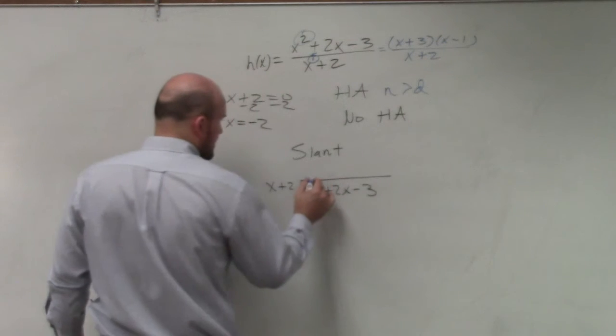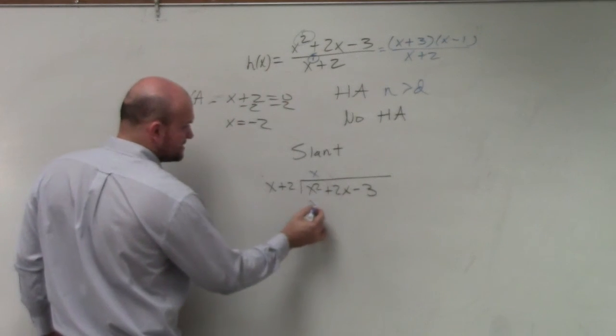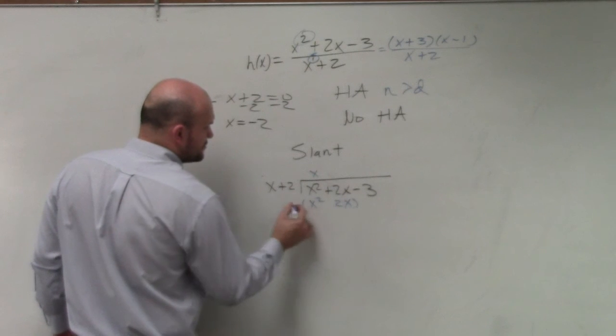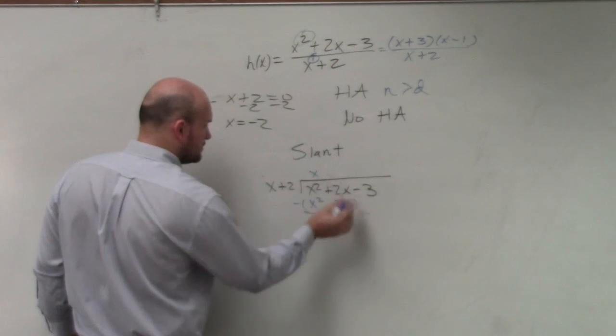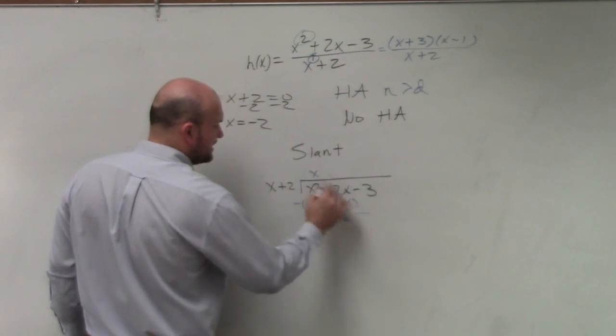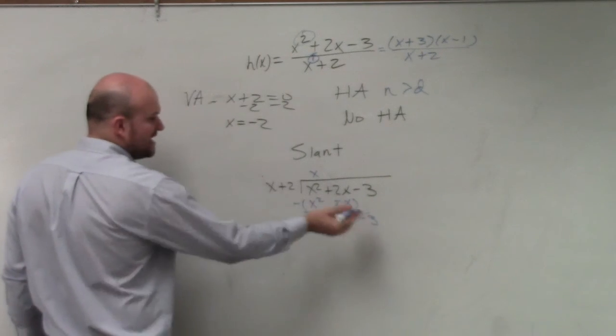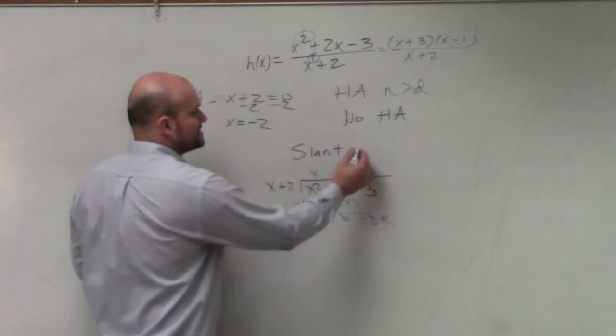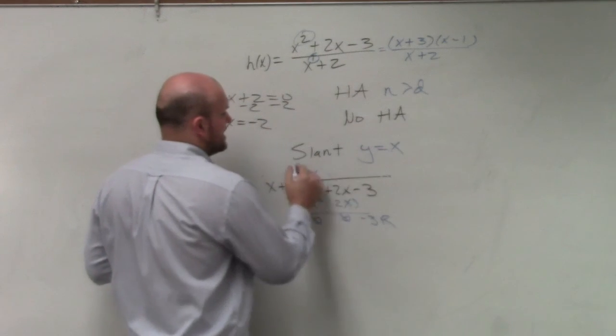So how many times does x go into x squared? That's x times. x times x is x squared, x times 2 is 2x. Subtract. Bring down the negative 3. x does not go into negative 3, so that's my remainder. But your remainder is always going to go to 0. So your slant asymptote is y equals x.